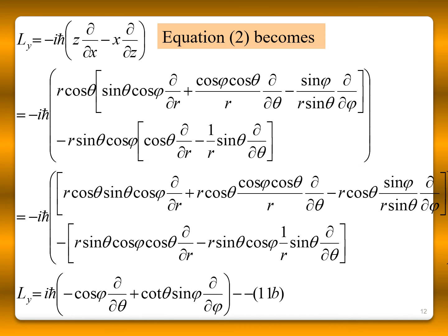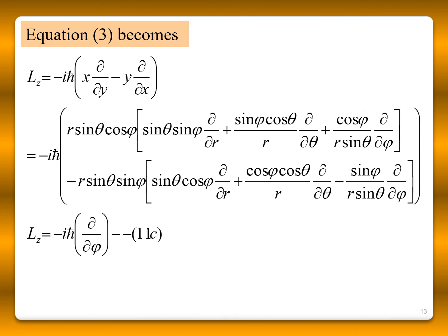Similarly for Ly, substituting the values of ∂/∂x, ∂/∂z, Z, and X, we get: Ly = iℏ(−cosφ ∂/∂θ + cotθ sinφ ∂/∂φ). And for Lz, substituting values for X, Y and ∂/∂y, ∂/∂x, we obtain: Lz = −iℏ ∂/∂φ.